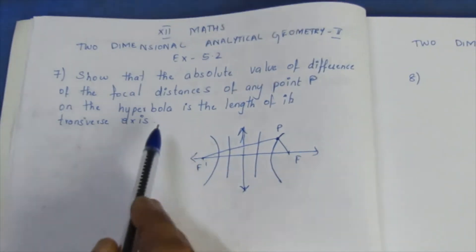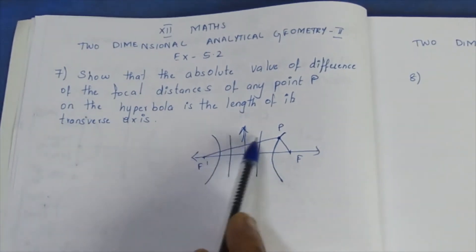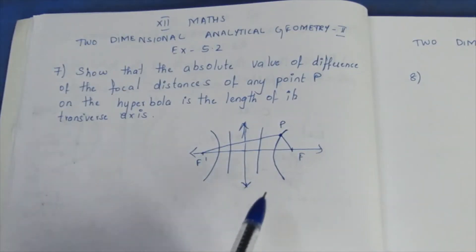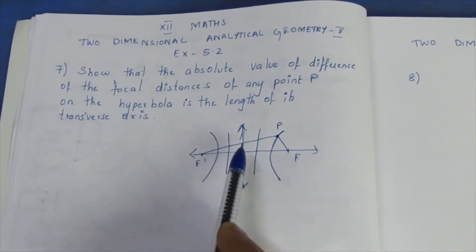Now we have to prove that the difference of the focal distances equals 2a.